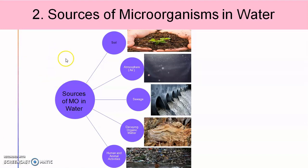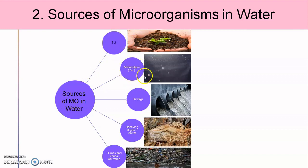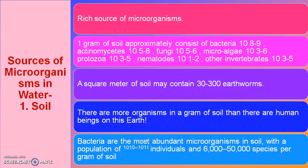Now the second point in this unit is sources of microorganisms in water — from which sources do microorganisms enter water. Looking at this diagram showing the different sources: one is soil, second is atmosphere or air, third is sewage, fourth is decaying organic matter, and fifth is human and animal activities. We will see each one by one.